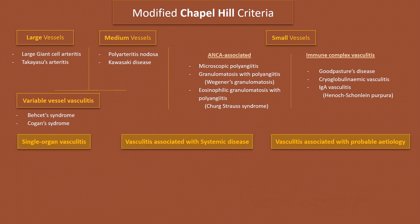Single organ vasculitis, as the name indicates, refers to vasculitis in arteries or veins of any size in a single organ and has no features suggesting it is a limited expression of systemic vasculitis. The involved organ and vessel types should be included in the name. These include primary central nervous system vasculitis, cutaneous small vessel vasculitis, isolated aortitis, etc.